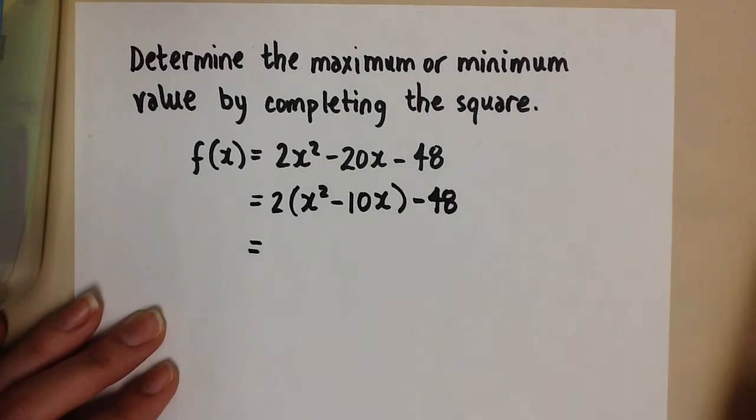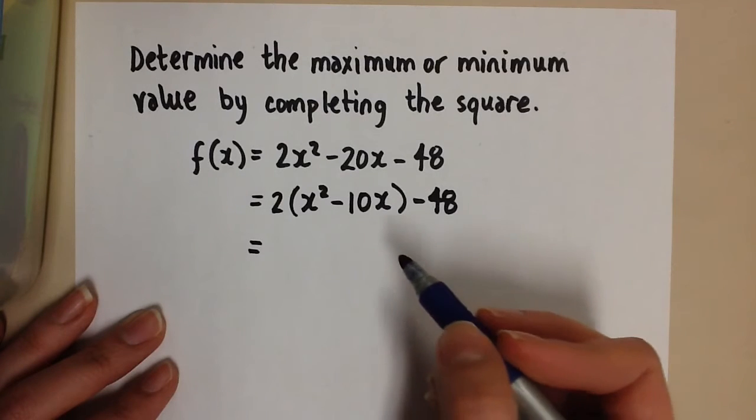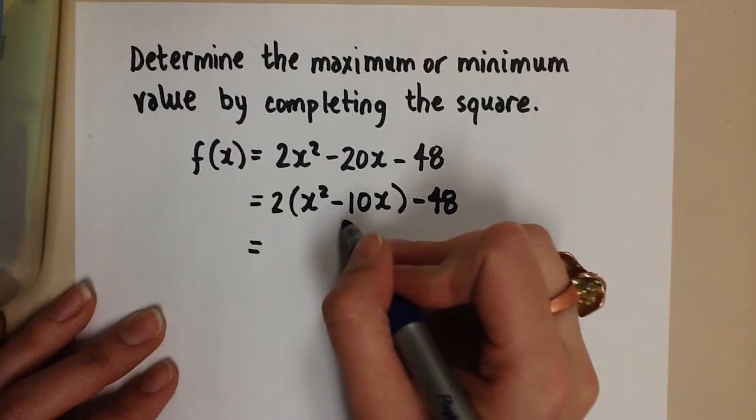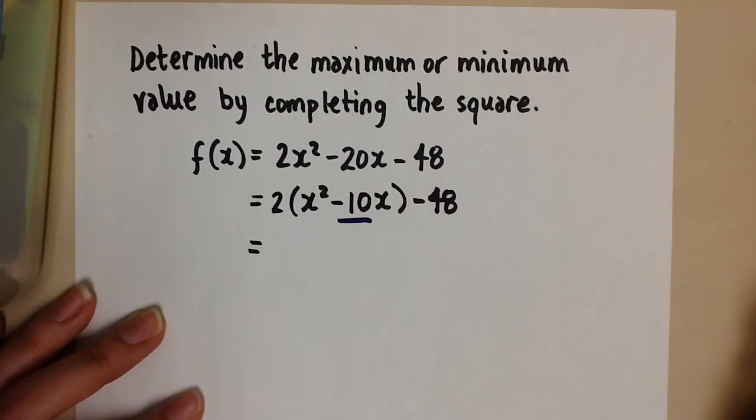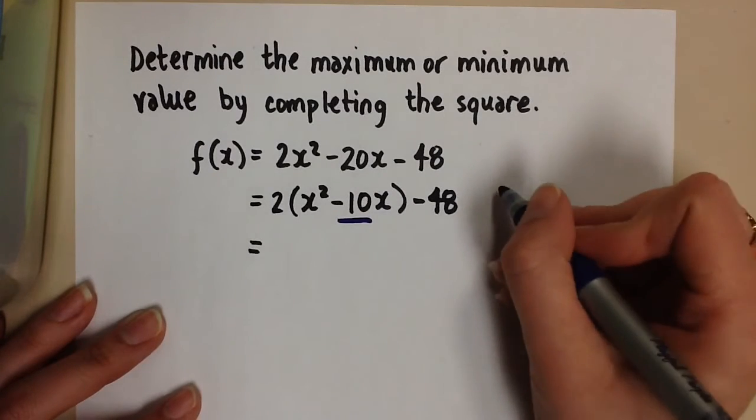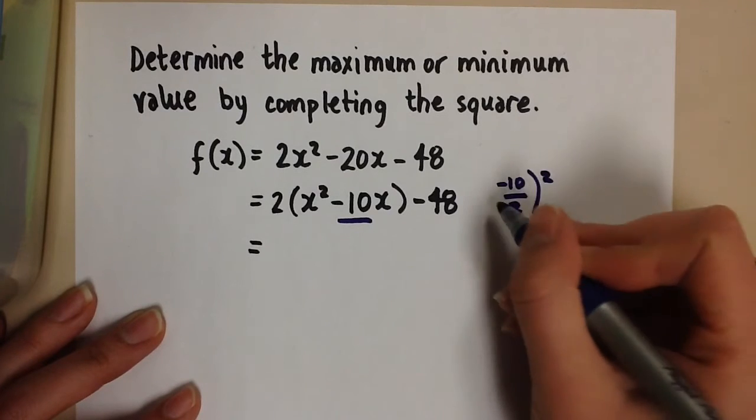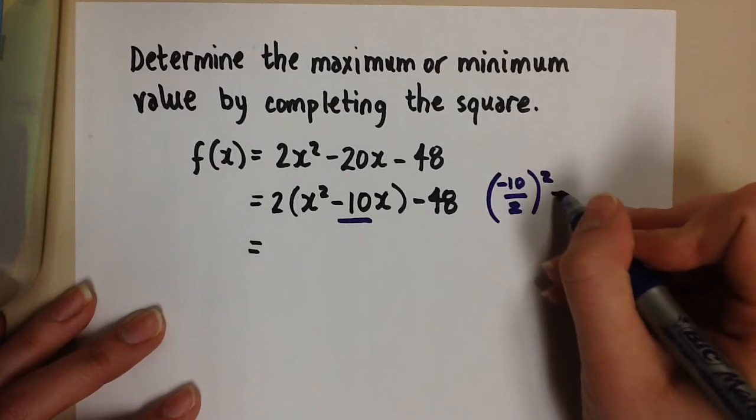Then, to find out what we're going to add and subtract from the equation in order to manipulate this into a perfect square, we're going to take that coefficient of the x term and divide it by 2, then square it. This gives us 25.